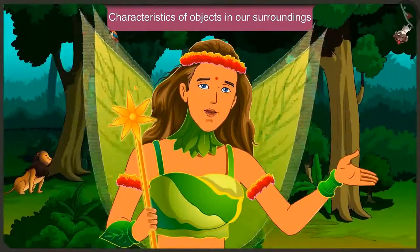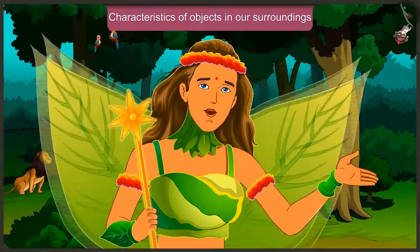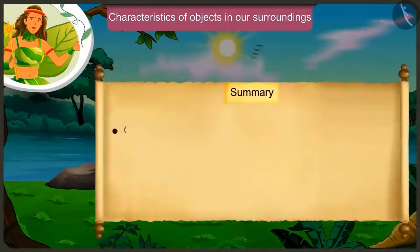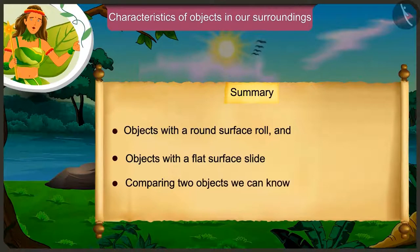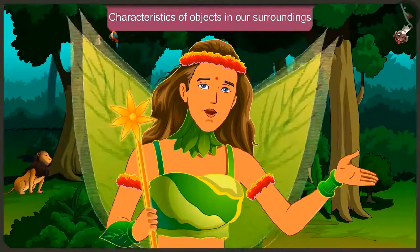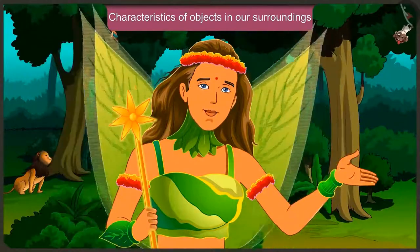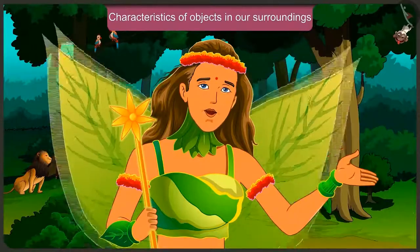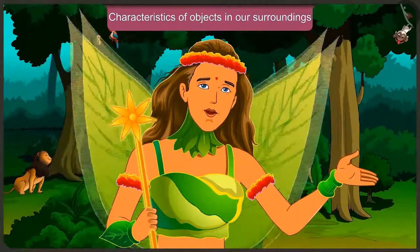Through Appu and Jaggu's conversation, we came to know that objects with a round surface can roll, and objects with a flat surface slide. By comparing two objects, we can find out about their length. You must also try to see such characteristics in the objects around you. In the next video, we will understand the characteristics of the objects around us with some examples.